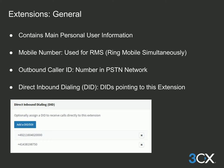A direct inward dial number is a number used to contact an extension within the PBX directly. This is covered in module 1.4 SIP trunks. You can also assign a DID directly to an extension from within the extension itself, which will automatically populate an inbound rule and point the calls to this extension.